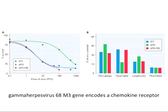On the right, measuring the number of different immune cells coming into an infected area — macrophages, neutrophils, lymphocytes, monocytes — by flow cytometry. In blue is the wild-type virus pattern. With the M3 gene deleted, you get more macrophages coming in, because the chemokine that M3 was antagonizing is now free to work and bring more macrophages into the infected area.